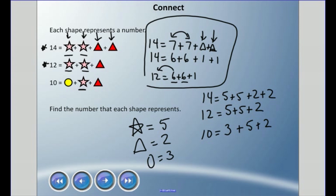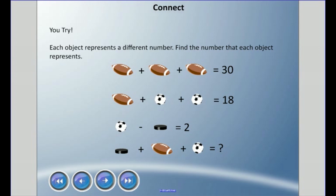So some guessing and checking and trying different numbers to see what could work. Alright, I'm gonna get you to try this one. I got objects, and these objects are sports equipment or objects that you score with. Each object represents a different number. Find the number that each object represents. I'd like you to pause and do a lot of guessing and checking and see if you can puzzle this out.